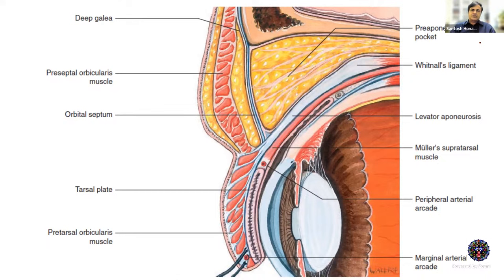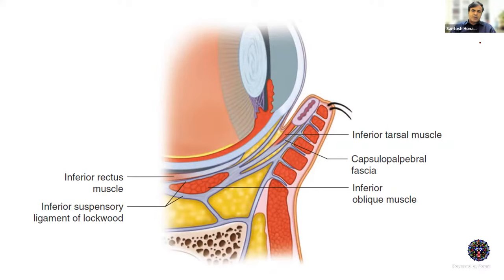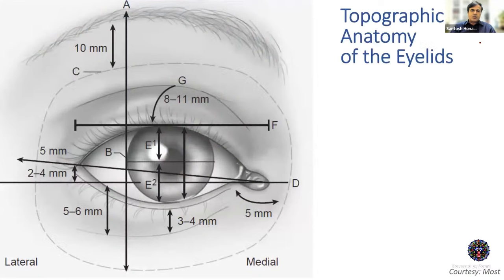This is a picture we are very familiar with — we simply know these structures exist in the eyelid but have never bothered to understand the relationship of each structure and how many parts each is made up of. This is the lower lid anatomy — it looks simple but when you go structure by structure and delve deep into anatomy, you understand how complex it is. Let's begin with topography.